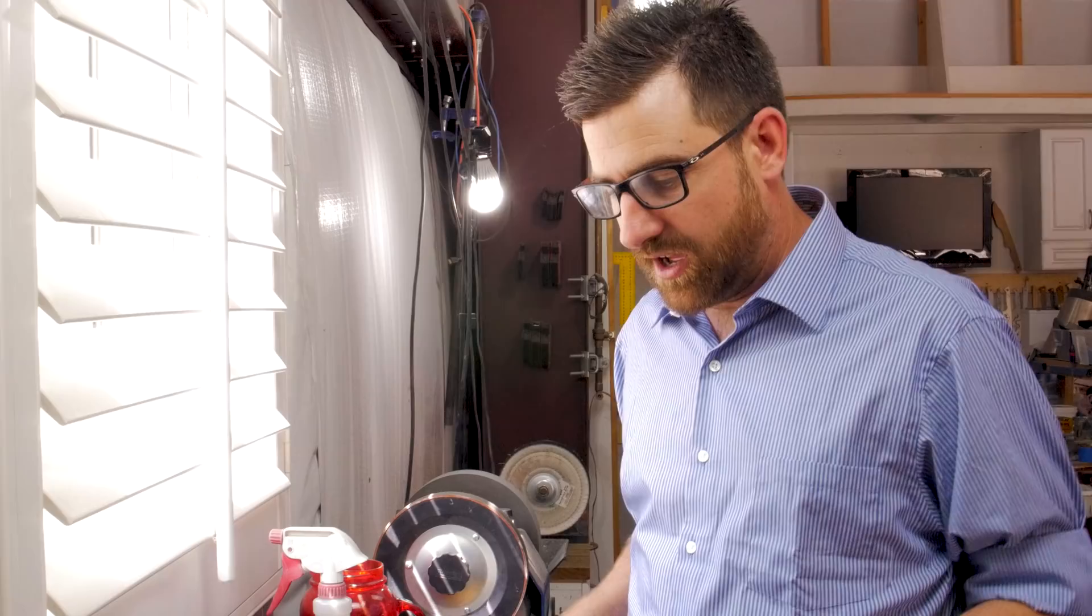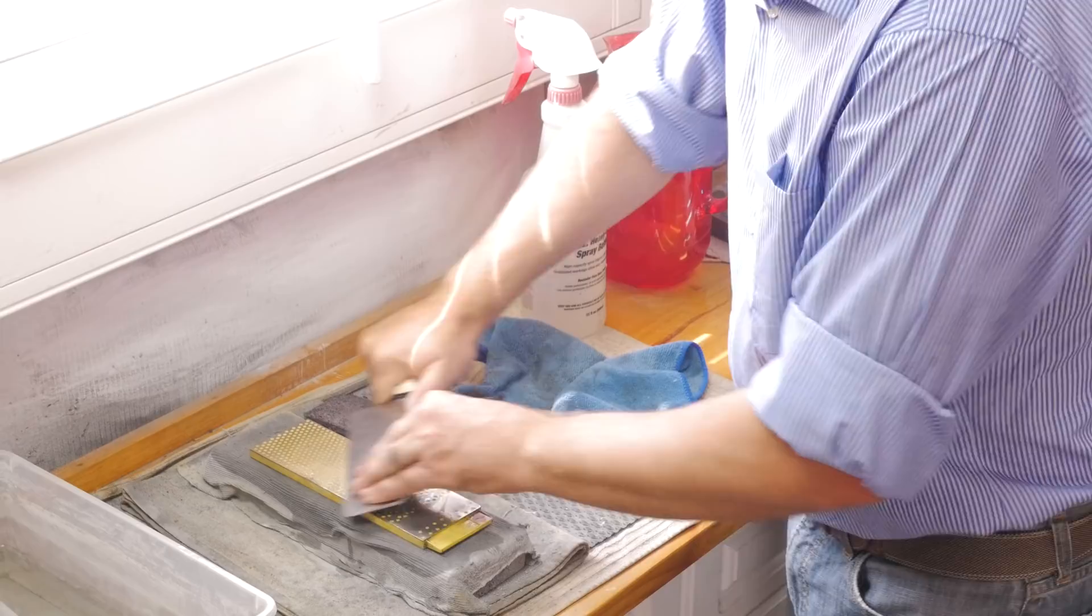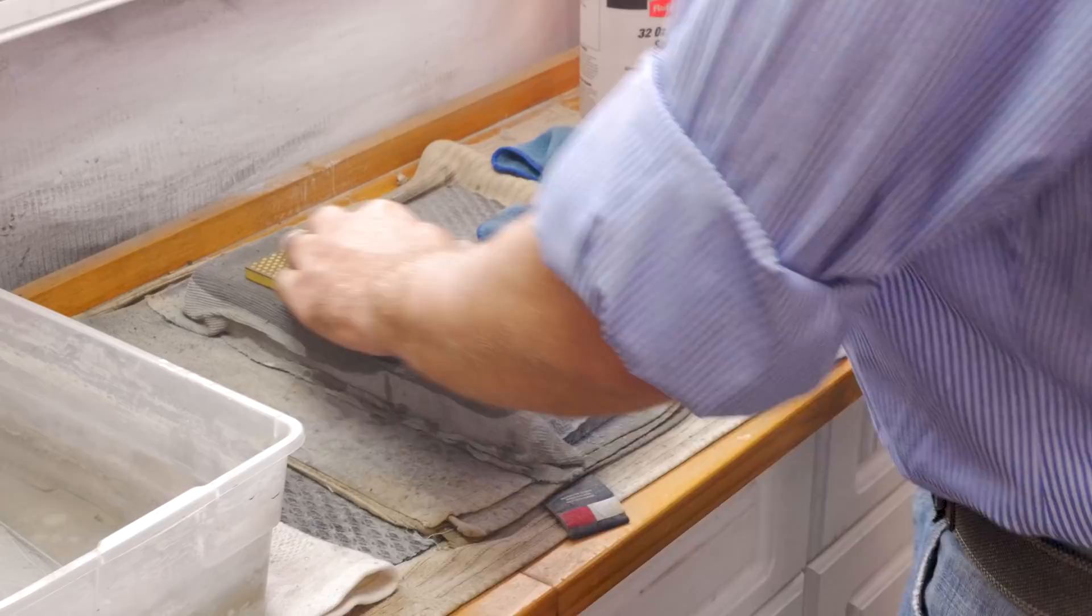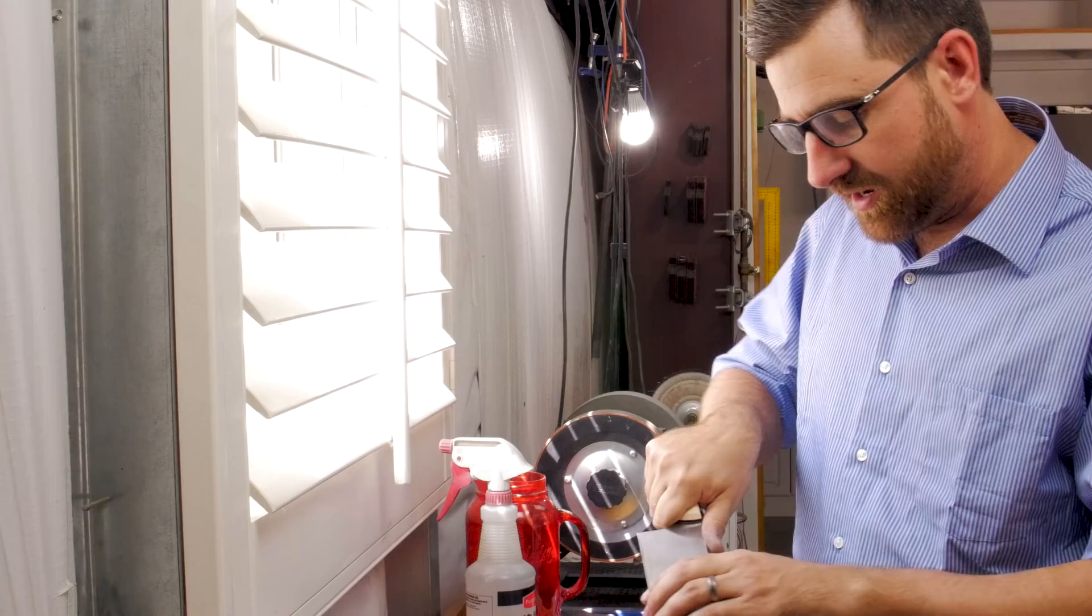So I'll take it and I'll start and I'll walk my fingers back and forth and kind of keep pressure where I'm going back and forth. Now I'm constantly changing kind of direction. Now the reason I do that is because I want to make sure I don't get a low spot in the blade. I want to make sure that that sharpening is happening nice and even across the whole blade.